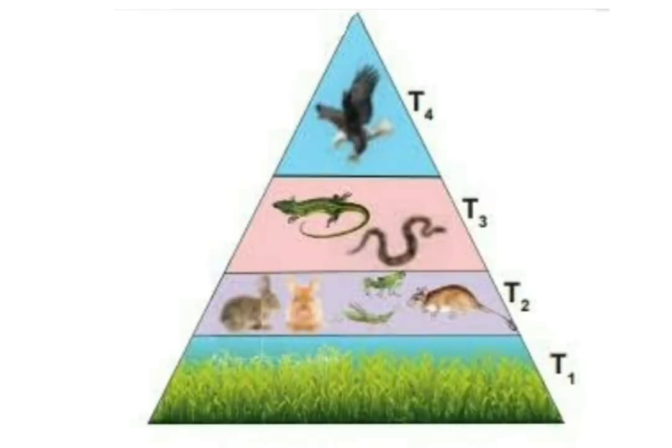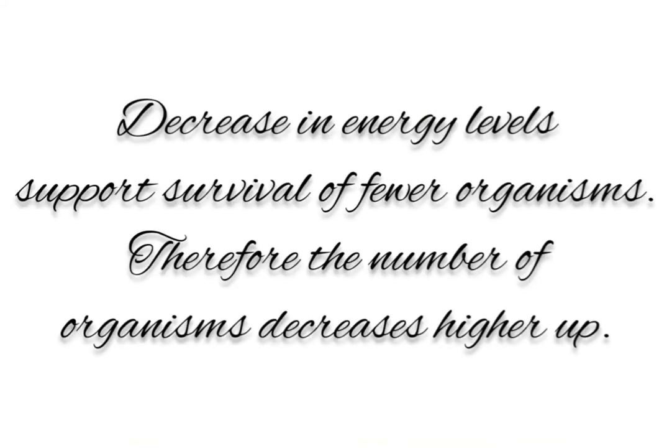For example, a large number of corn plants are needed to support the rat population in a field; few snakes eat the rats, and one eagle can eat all the snakes. Since only 10% of energy is passed on to the next level, the decrease in available energy limits the survival of fewer organisms. The number of organisms therefore decreases as we move from producers to consumers in a food chain.